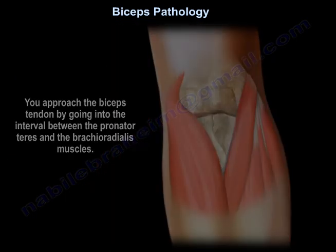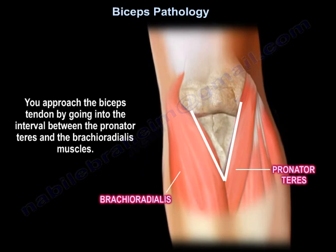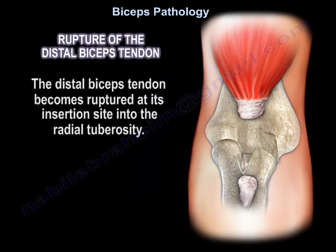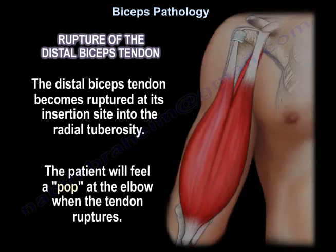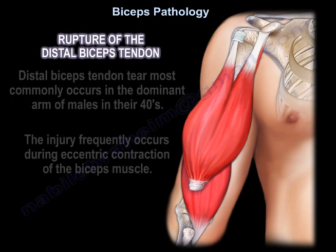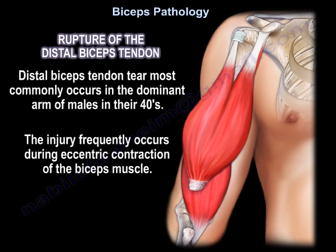You approach the biceps tendon by going into the interval between the pronator teres and the brachioradialis muscles. The tendon ruptures at the radial tuberosity, and the patient will feel a pop at the elbow when the tendon ruptures. Distal biceps tendon tear most commonly occurs in the dominant arm of males in their forties, and the injury frequently occurs during eccentric contraction of the biceps muscle.